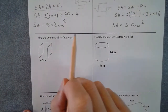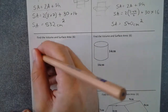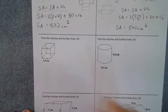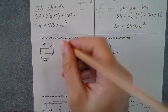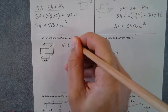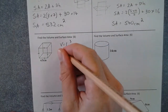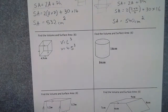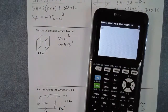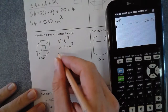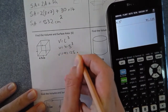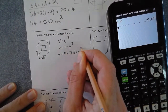Third question — volume and surface area of a cube. The volume of a cube is the length cubed, which is 4.5 cubed. Typing 4.5 to the power of 3 into the calculator gives a volume of 91.125 cubic centimeters.